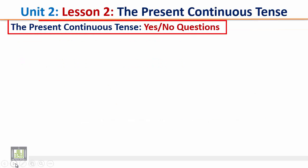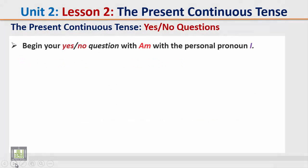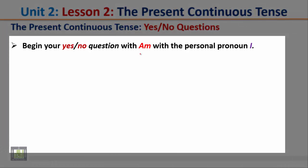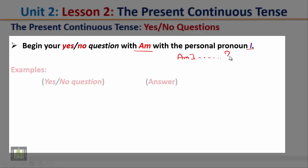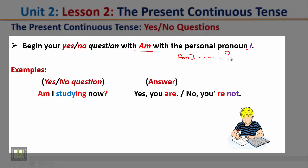The Present Continuous Tense — Yes-No Questions. Begin your Yes-No Question with 'Am' when the personal pronoun is 'I'. So start your question with 'Am I', then complete your question. Example: 'Am I studying now?' Notice here we start with the verb 'Am' because the subject is 'I'. The answer: Yes you are, or No you're not.